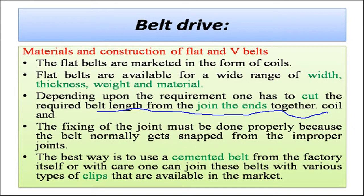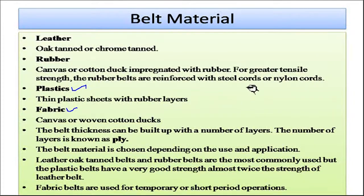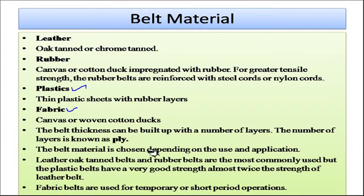Different materials are available for the belt: leather, rubber, plastic, and fabric. Leather is oak-tanned or chrome-tanned material. Rubber is a canvas or cotton duck impregnated with rubber; for greater tensile strength, rubber belts are reinforced with steel cords or nylon cords. Plastics use thin plastic sheets with rubber layers. Fabric belts use canvas or woven cotton ducts. Belt thickness is built up with a number of layers called plies — single ply, double ply, triple ply, and so on.